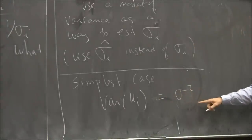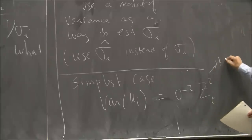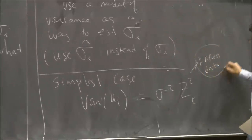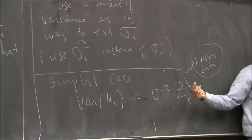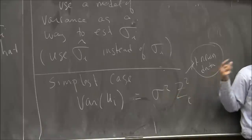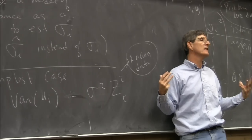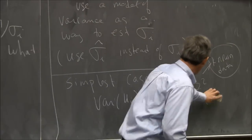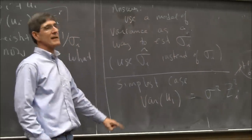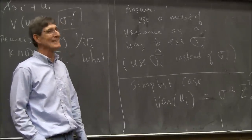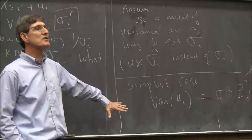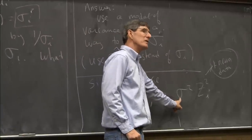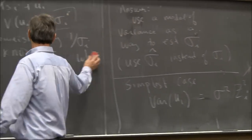We actually know the variance — we just don't know if σ² is two or three or four. So we know the variance up to a scale factor, which is probably more information than you'll ever have, but sometimes this is a decent model of the variance. The simplest case is when the variance follows this model. The solution: divide through by σᵢ = σ·zᵢ. We'd like to divide by σ too, but we don't know that.